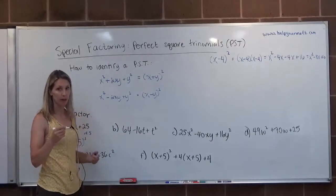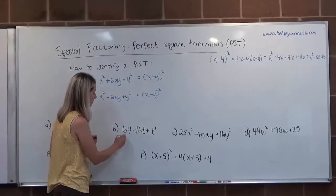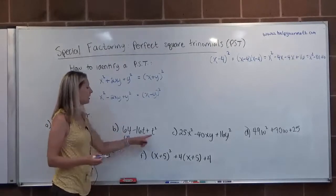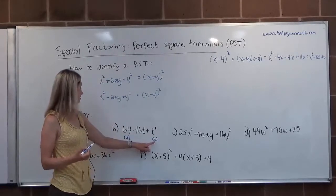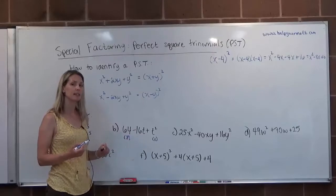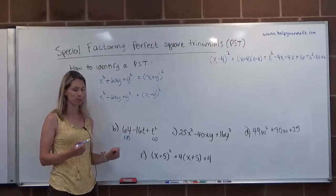Is 64 a perfect square? Yes it is. Its root is 8. T squared is a perfect square. Its root is T. Now the question is, T times 8 doubled, does that give us that middle term? Yes it does.